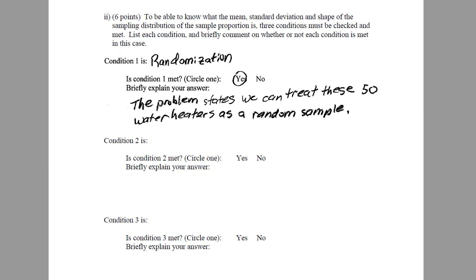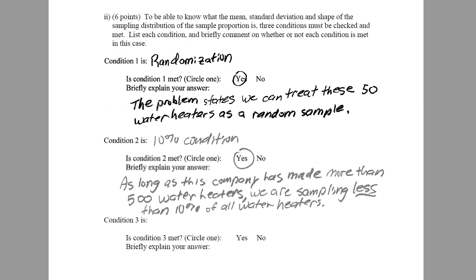Next, we have condition number two, which is less than 10%. And what does this mean? The 10% condition means that we have sampled less than 10% of the whole population. And with some pretty safe assumptions, we can assume that these 50 water heaters are less than 10% of all the water heaters that the company makes. We could even comment further and say that it is safe to assume the company makes more than 500 water heaters. So this sample size of 50 is less than 10% of all the water heaters the company makes.